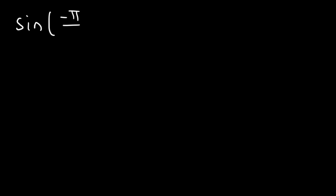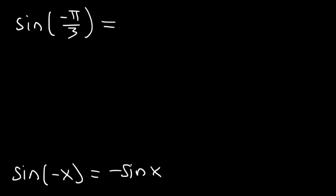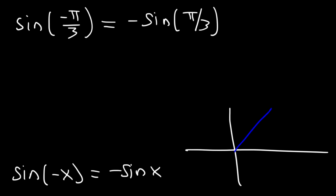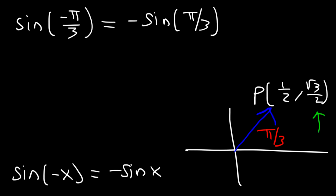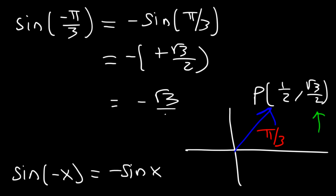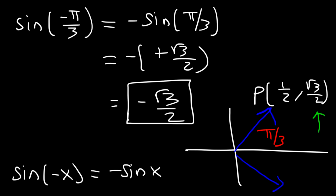Now what about sine of negative π/3? We know that sine of negative x is negative sine x. So sine of negative π/3 is negative sine of π/3. At an angle of π/3, the unit circle point is (1/2, √3/2), and sine is associated with the y-value. So sine of π/3 is positive √3/2. But with a negative sign in front, sine of negative π/3 is going to be negative √3/2. Negative π/3 is an angle in quadrant 4, and sine is negative in the fourth quadrant, which agrees with our answer.